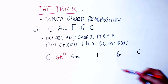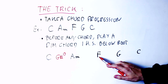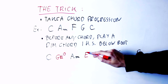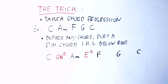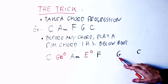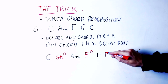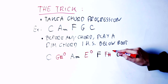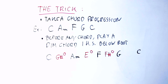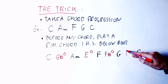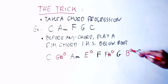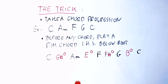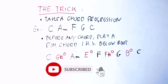Before the F chord, I go a half-step down from F to get E, so I play an E diminished seventh chord. Before G, I go down a half-step to F sharp, so I play an F sharp diminished seventh chord. And before the final C, I go down a half-step to B and play a B diminished seventh chord. Here is how it sounds.